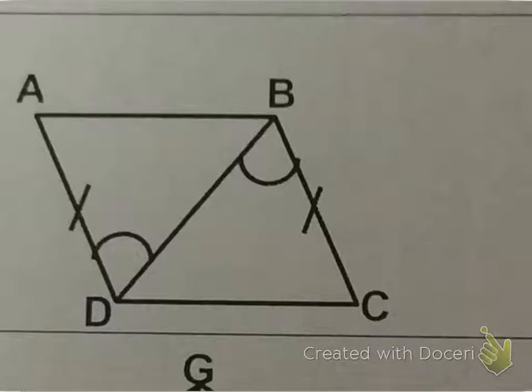So let's do part A first where it says state the congruent parts. If you look at this diagram right here, then you can clearly see that I've got some congruent parts. This line right here and this line right here means that those sides are congruent.